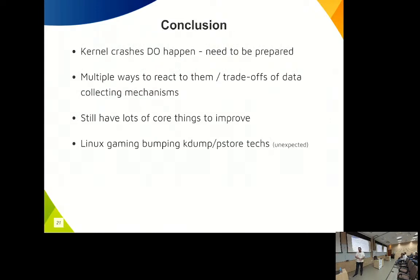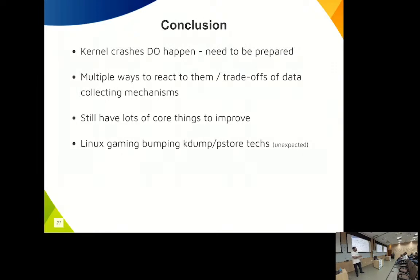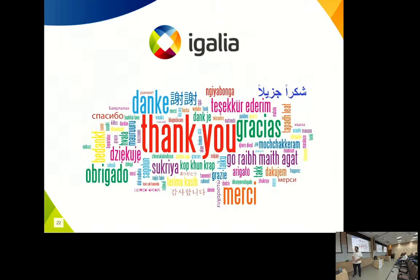In conclusion: we've seen how a kernel panic works under the hood, with multiple ways to collect data — each with trade-offs. There's no perfect solution; you choose based on whether you prioritize more data or more reliability. There are many things to improve. The speaker appreciates Valve and the Linux gaming community for driving improvements in unexpected areas like crash collection — something you wouldn't expect gamers to push forward, but it's happening.